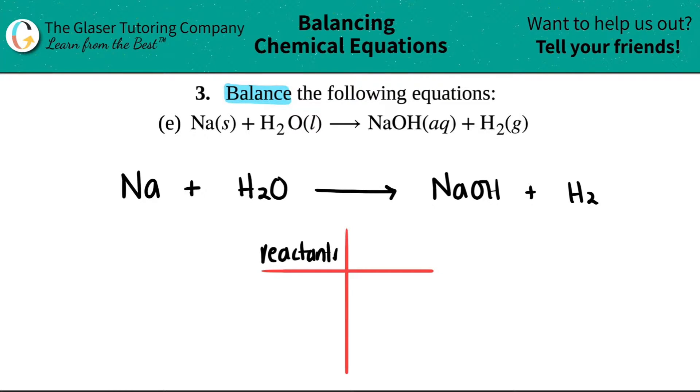The reactants are always your starting materials, so that's always going to be on the left hand side of this equal sign. The products are always the right hand side of your yield sign.